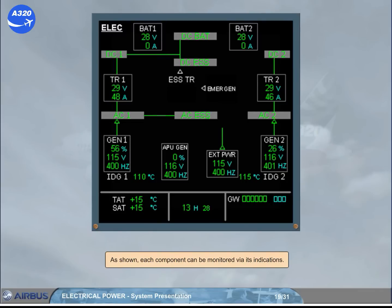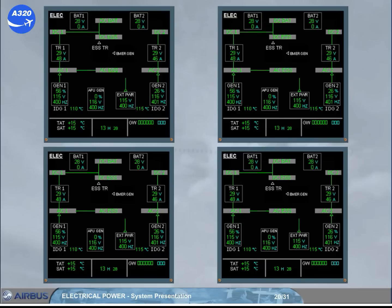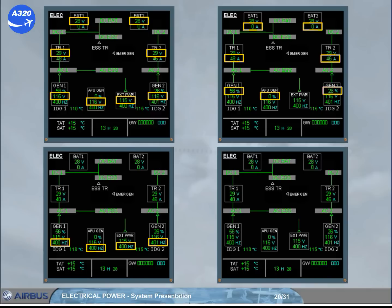As shown, each component can be monitored via its indications. These indications are voltage, current or load for the generators, frequency, and IDG temperature.